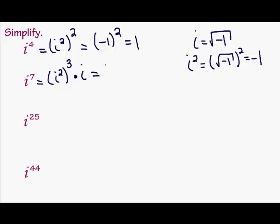Remember, i squared is negative 1. And that's why I did that. It's still to the third power though. Times i. Negative 1 to the third power is negative 1 times i, which is negative i. So i to the seventh is negative i.